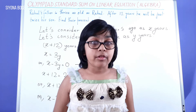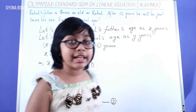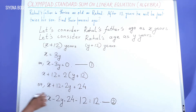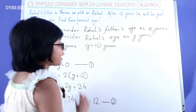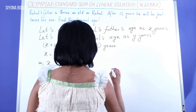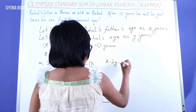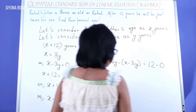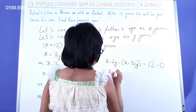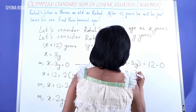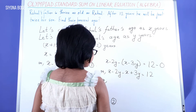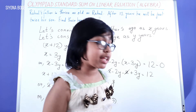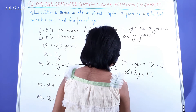Now we need to do some operation with these equations to find X and Y. Let's do an elimination process, which is one method of solving simultaneous linear equations. Let's try to eliminate Y. To do that, we subtract equation 1 from equation 2: (X minus 2Y) minus (X minus 3Y) equals 12 minus 0. We can cancel out the X terms. Plus 3Y minus 2Y gives Y, equal to 12.